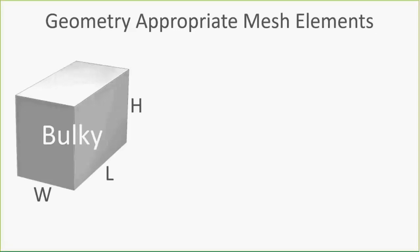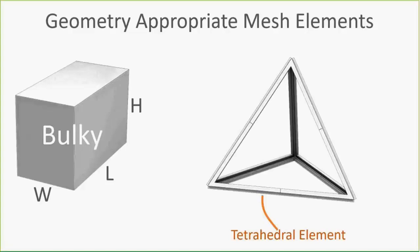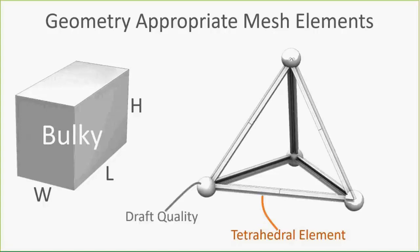Let's focus on bulky geometry first. Bulky geometry generates what we call a 3D mesh — it's a tetrahedral mesh. The entire pyramid shape is called an element, and at the corners are what we call nodes, where the equations for displacement, strain, and stress are calculated. There are two element types for a solid mesh: draft quality, which has corner nodes. If you virtually push on the top of that pyramid and hold the base still, the edge moves in a linear fashion — y equals mx plus b.